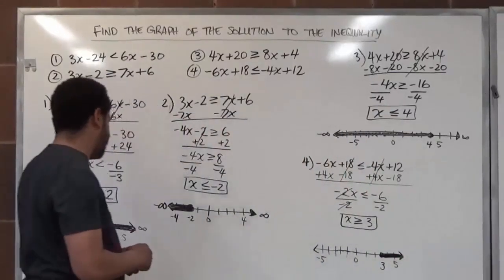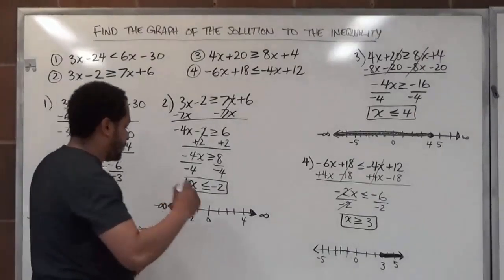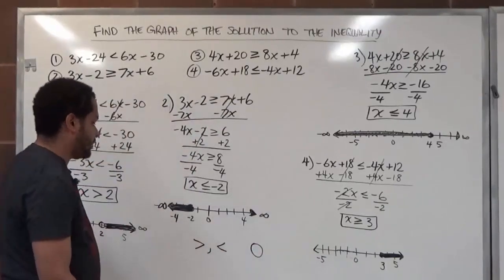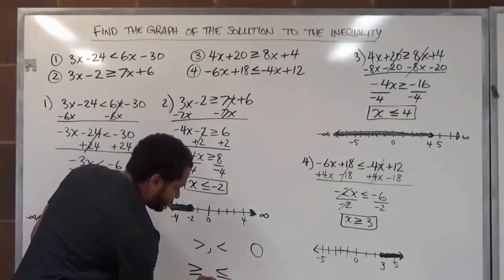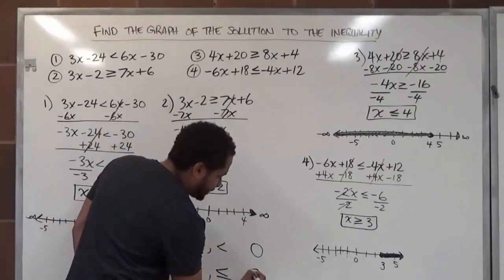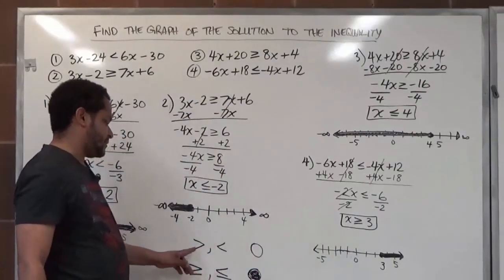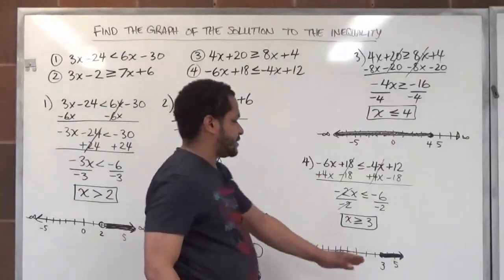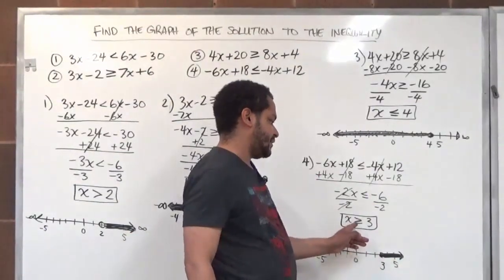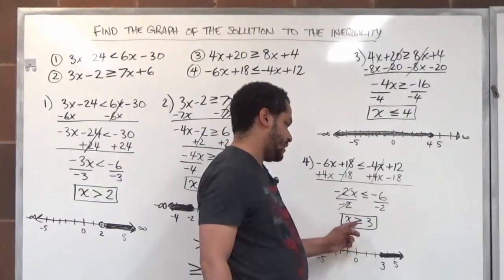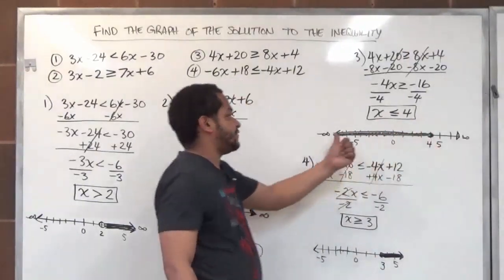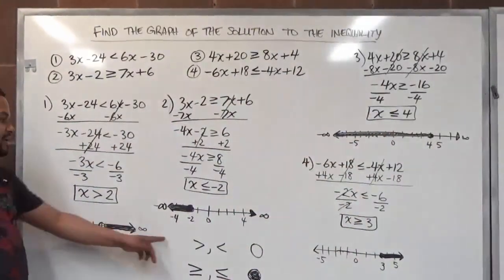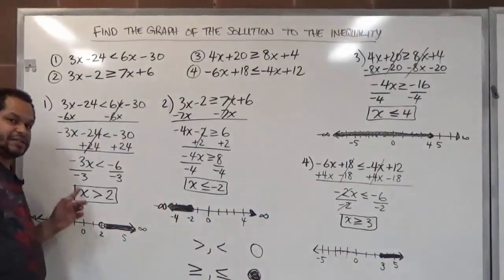Before we close out, let me mention a few important things. When you're dealing with strict inequalities — less than or greater than — remember to use an open dot on the graph. When using less than or equal to or greater than or equal to, you fill the dot in. The direction you shade is based on the arrow when your x is on the left: if x is greater than or equal to 3, you go right; if x is less than or equal to 4, you go left. The type of dot is based on the inequality — solid for 'or equal to,' open for strict. The shading always follows the direction of the arrow.